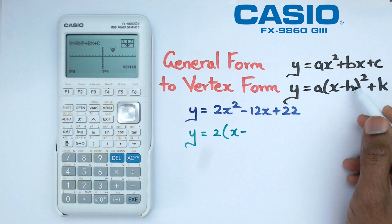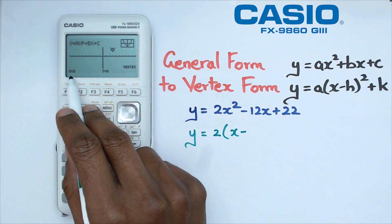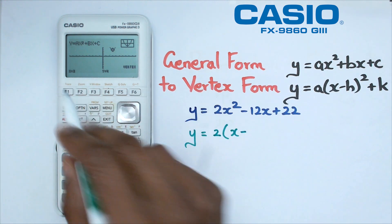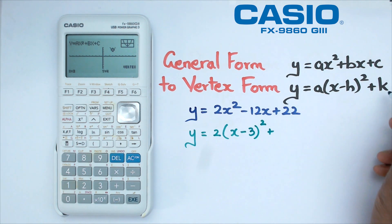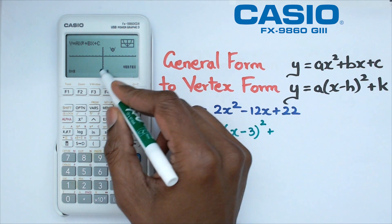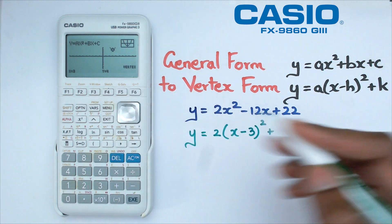So we're gonna put down 2, we're gonna write down x minus h. Now this particular h value is the x value, so that's why it's coming first, that's the 3, so we're gonna write this as x minus 3 squared plus k. The k happens to be the y value of the vertex.